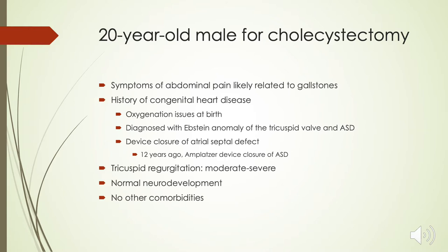Our case is a 20-year-old male presenting for cholecystectomy. He has symptoms of abdominal pain on a daily basis. He was investigated and found to have gallstones. His history is remarkable for congenital heart disease. He had oxygenation issues at birth and was diagnosed with Epstein anomaly of the tricuspid valve and also an ASD. He underwent device closure of the atrial septal defect 12 years ago with an Amplatzer device.